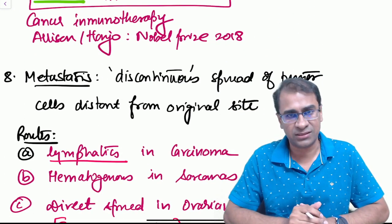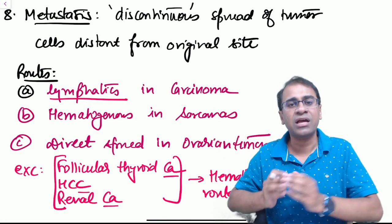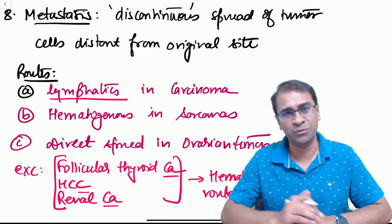Next there is discontinuous spread called metastasis. It can occur by lymphatics for carcinoma, hematogenous for sarcomas, and direct spread occurs in ovarian tumors.